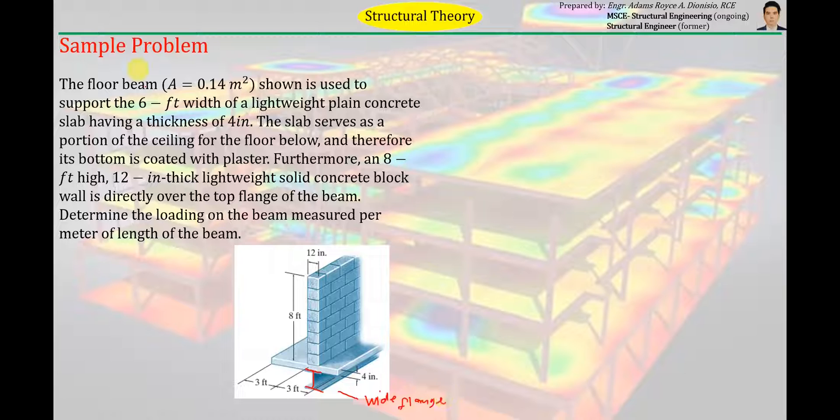The floor beam with a cross-sectional area equal to 0.14 square meter is used to support 6 feet width of a lightweight plain concrete slab having a thickness of 4 inches. So meron siyang sinosupport na slab, ito yun. Ito yung slab na tinutukoy and yung width niya ay 6 feet. So 3 feet plus 3 feet, 6 feet. So yung 6 feet width ng concrete slab na yan, sinosupport ng floor beam. And ang thickness ng slab ay 4 inches according to the question.